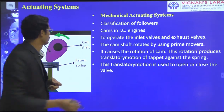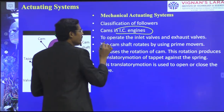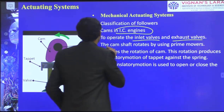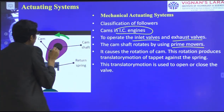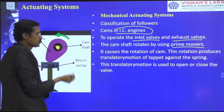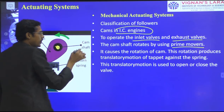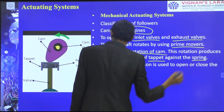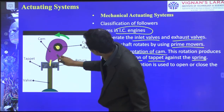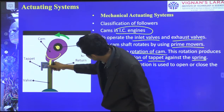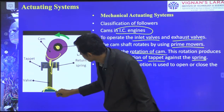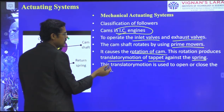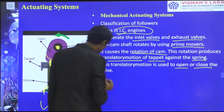A few applications: CAMs in IC engines are used to operate the inlet valve and exhaust valves. The camshaft rotates using a prime mover. The rotation of the cam produces a translating motion of the tappet against the spring. Whenever the cam profile is flat, the valve is at rest; as the profile rises, it presses and opens the inlet valve. This translation motion is used to open or close the valve in IC engines.